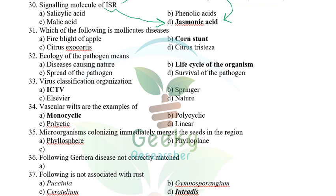Which of the following is a mollicute disease? Phytoplasma and spiroplasma come under mollicutes (now reclassified under Tenericutes). Fire blight of apple is a bacterium; citrus exocortis is a viroid; citrus tristeza is a virus. Corn stunt (Maize stunt) is a spiroplasmal disease — so the mollicute disease answer is corn stunt.